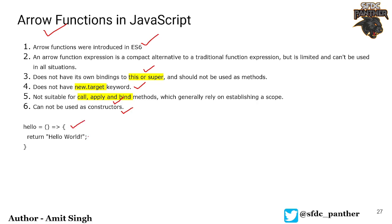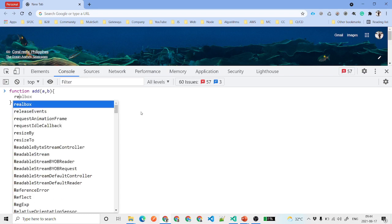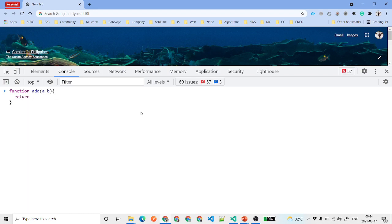This is a very simple structure of arrow functions. You have the name of the function, the parameters, and then the arrow — also known as the fat arrow — followed by opening and closing curly braces which denote the function body. Let's quickly see a demo. We'll take a method and convert it into an arrow function. We'll create a function called 'add' that adds two numbers.